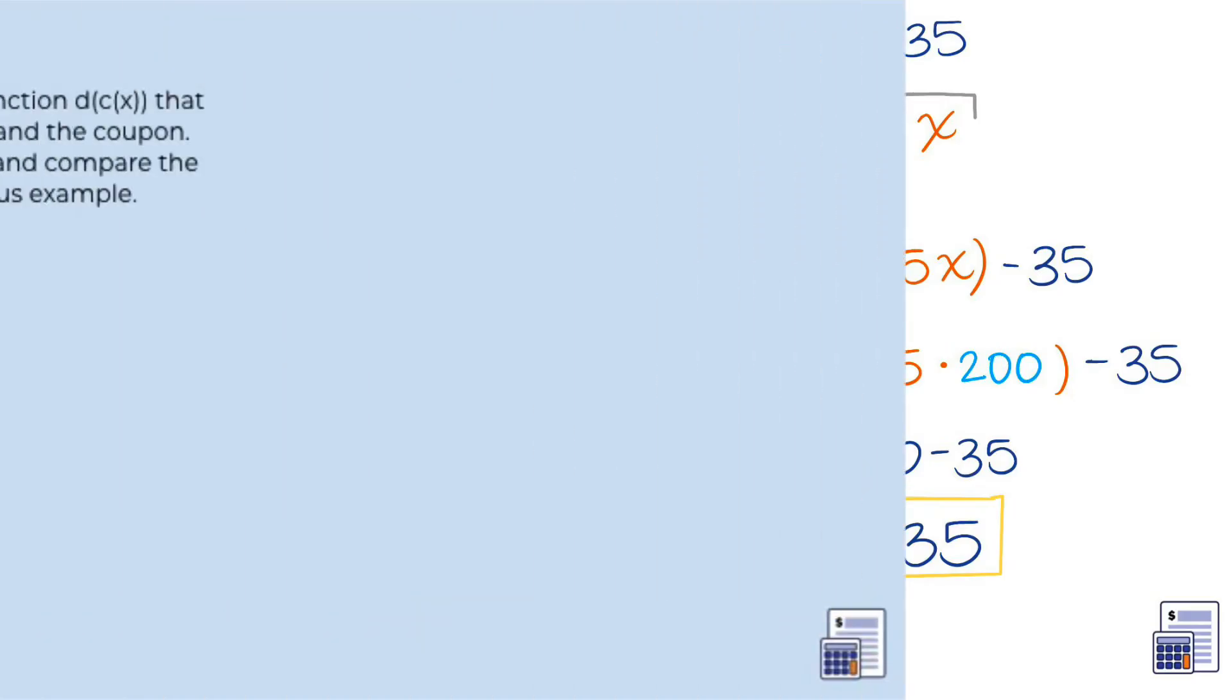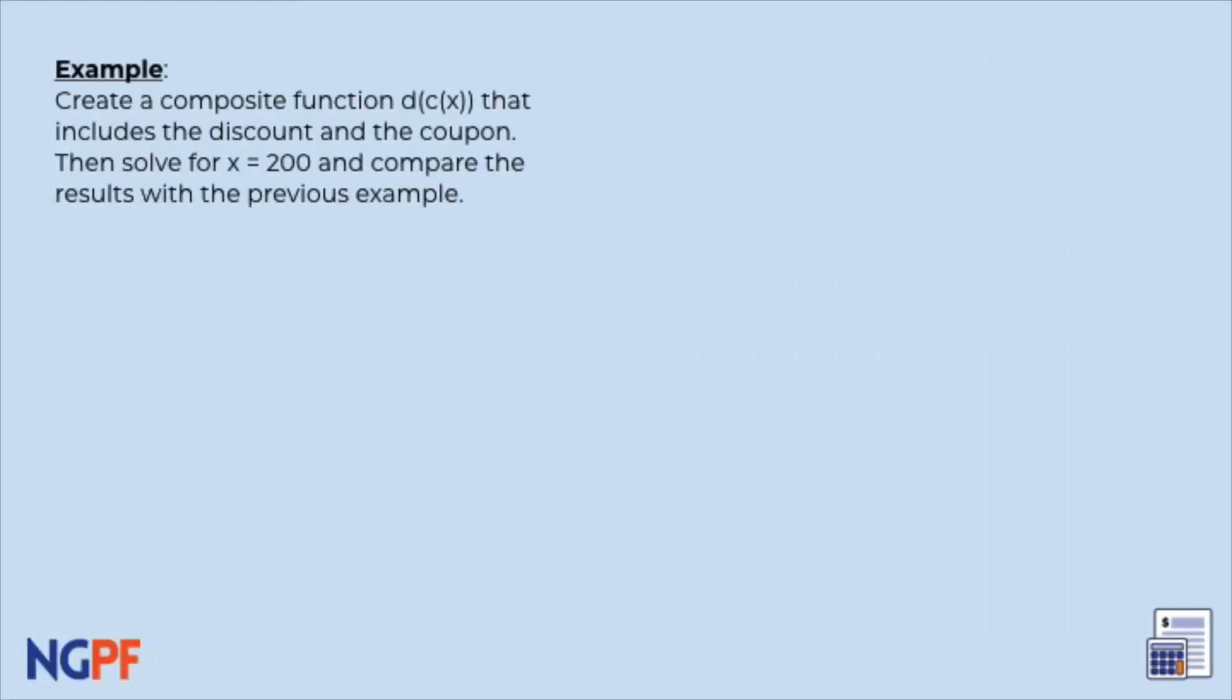Now you try. Go ahead and switch the order and create a composite function for d(c(x)) that applies the coupon first then the store discount. Then solve for x equals 200 and compare the results with the previous example.